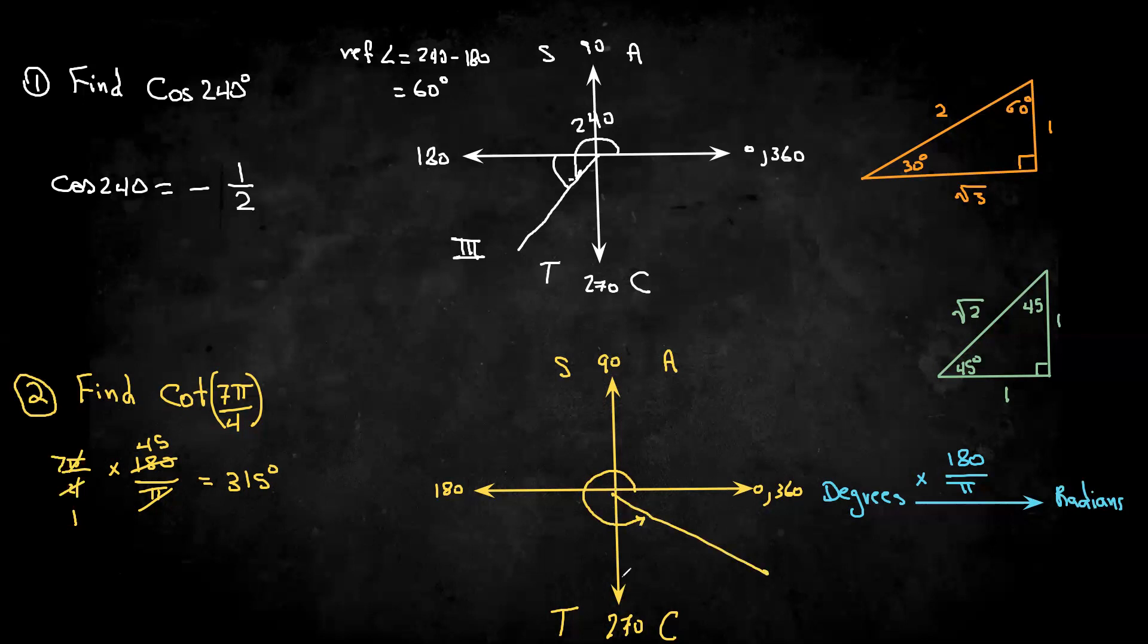So since I'm doing cotangent, that's related to tan, and only the cosine here is positive. All students take calculus means only the cos is positive here, so the cotangent has to be negative. So now we know what the sign is of the cotangent 7 pi over 4.